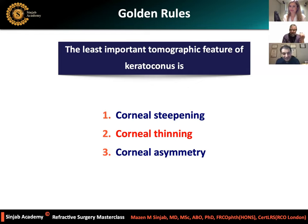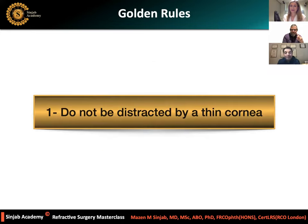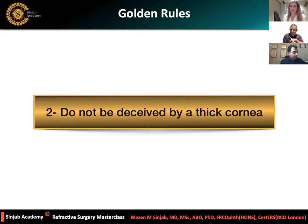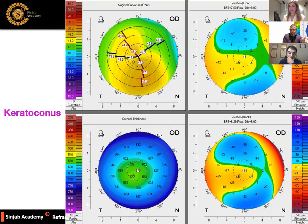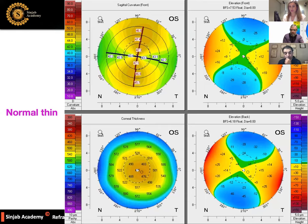Here is a case of keratoconus with a thick cornea — look at the thickness map: it is thick, almost normal thickness at 578 microns in the center, yet it is keratoconus. Meanwhile, this other cornea is normally thin but very symmetric and very normal. Thickness is not an indicator of ectatic corneal disease.